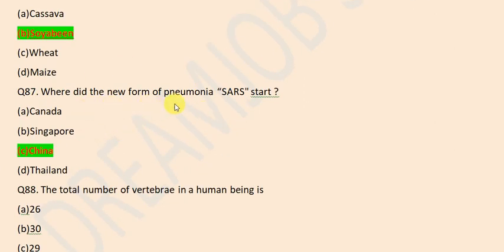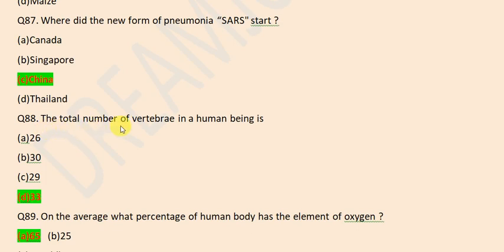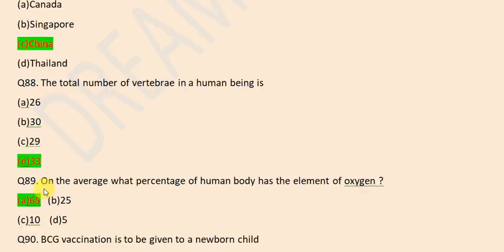Where did the new form of pneumonia SARS start? China. The total number of vertebrae in human beings is 33.